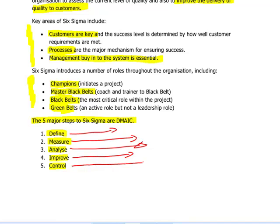The final stage is Control. With control, we need to ensure that we are controlling matters once we've implemented the improvements, so that any deviations or variations from targets are corrected immediately and brought back on target. So to summarise, we have: D — Define, M — Measure, A — Analyze, I — Improve, and C — Control. That's the summary of the DMAIC approach for improving existing business processes.